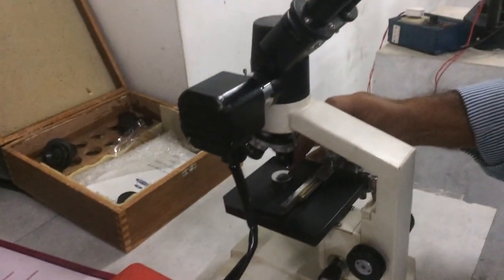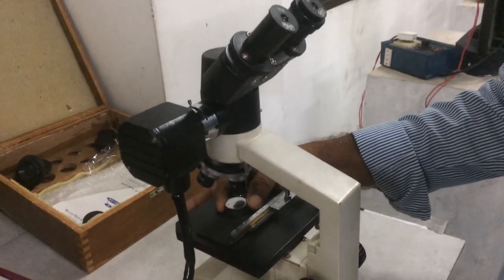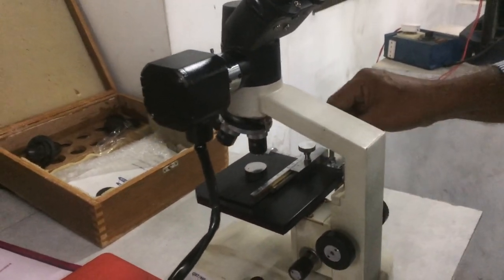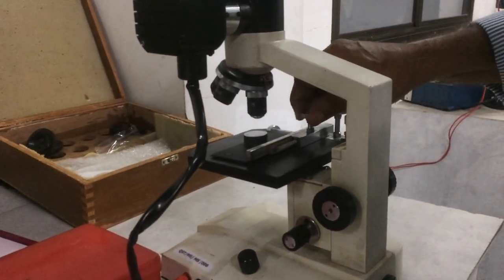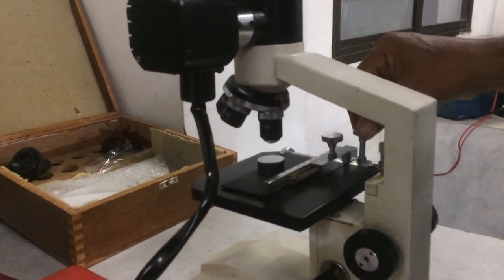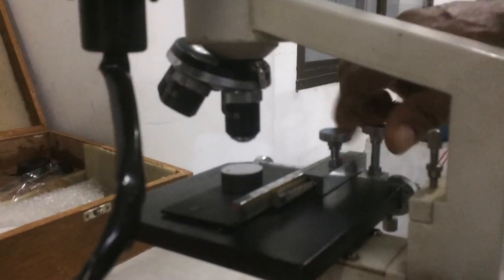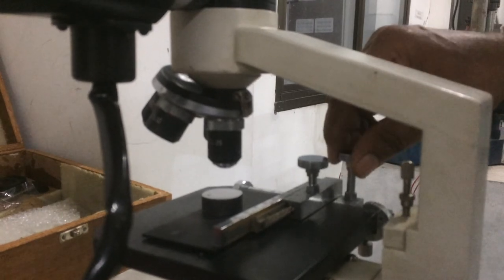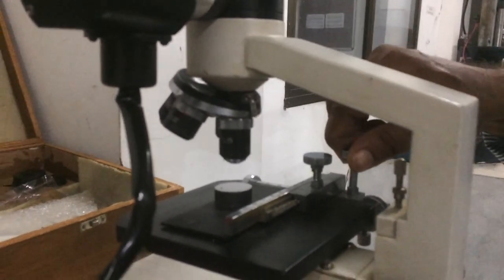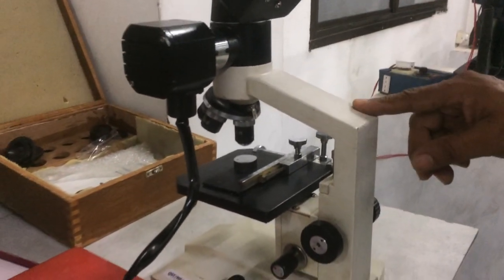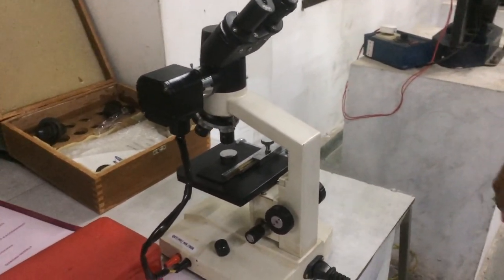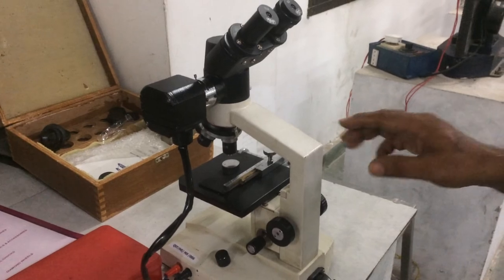We have kept the object here. So we can just move up and down. This is to move up and down. This is used for left and right. And this one is used for the forward and backward movement of the object. So this is a metallurgical microscope. During the microstructure check of a specimen we use this microscope.